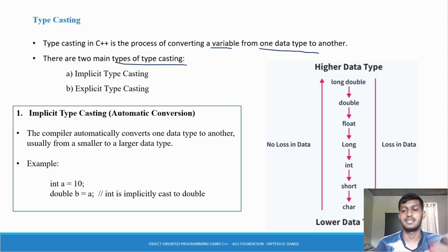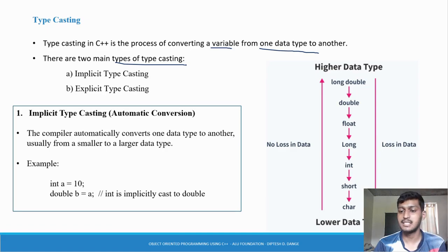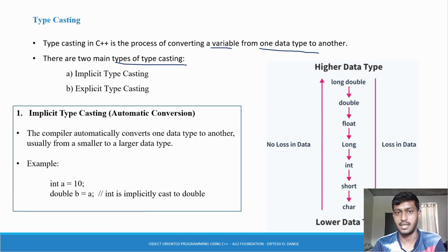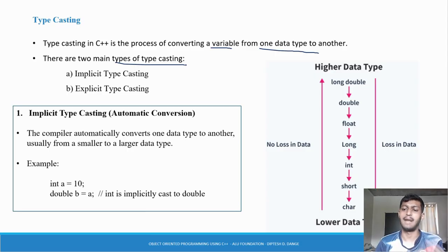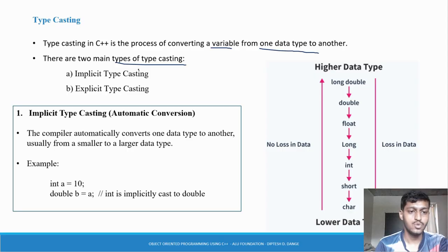There are two main types of type casting. The first one is implicit type casting and the second one is explicit type casting. The concept is the same as in C.